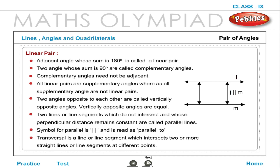Complementary angles need not be adjacent. All linear pairs are supplementary angles, whereas all supplementary angles are not linear pairs. Two angles opposite to each other are called vertically opposite angles. Vertically opposite angles are equal.